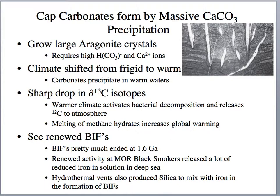Methane is a greenhouse gas about 30 times stronger than carbon dioxide. However, methane doesn't have a very long residence time in the atmosphere, but over short intervals it is a very potent greenhouse gas. Also during this time, we see renewed activity in banded iron formations. Most banded iron formations formed in the Proterozoic between about 2 billion and 1.6 billion years ago, but then we see them again around 600 million years ago. This could be because of increased activity at mid-oceanic ridges — black smokers producing more reduced iron into the ocean, and hydrothermal vents also producing more silica, which would mix with the iron to produce banded iron formations on the seafloor.